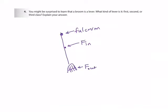Number four: you might be surprised to learn that the broom is a lever. What kind — first, second, or third class? The broom has the fulcrum at one end, where you place one hand. You push or pull with the other hand in the middle — that's your input force. The output force is exerted at the bottom of the broom where it sweeps the floor. This scenario, with the fulcrum at one end and output force at the other, makes it a third class lever.